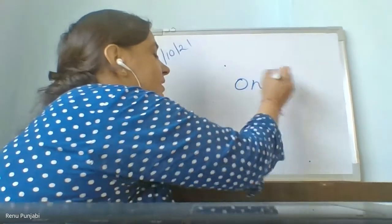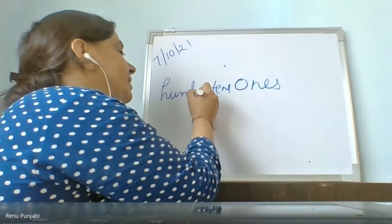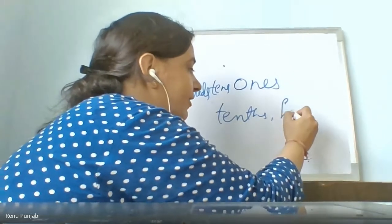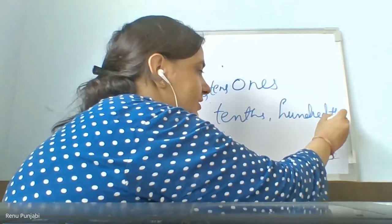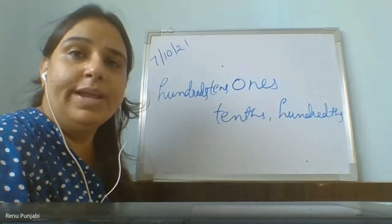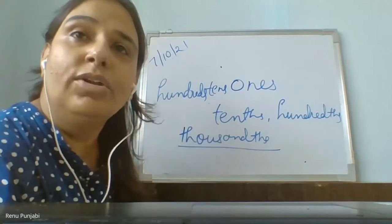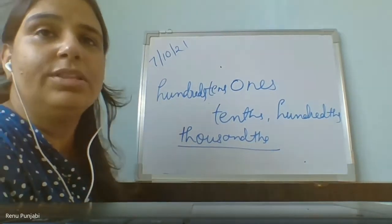You know about ones, tens, hundreds — this is the place value. But what do you know about why 'THS' is coming? Thousands. You have learned this. In the last chapter we did fractions. In grade 4, we learned the numbers: ones, tens, hundreds, thousands — in the Indian system. This chapter is also based on that. So this chapter is basically based on decimals.